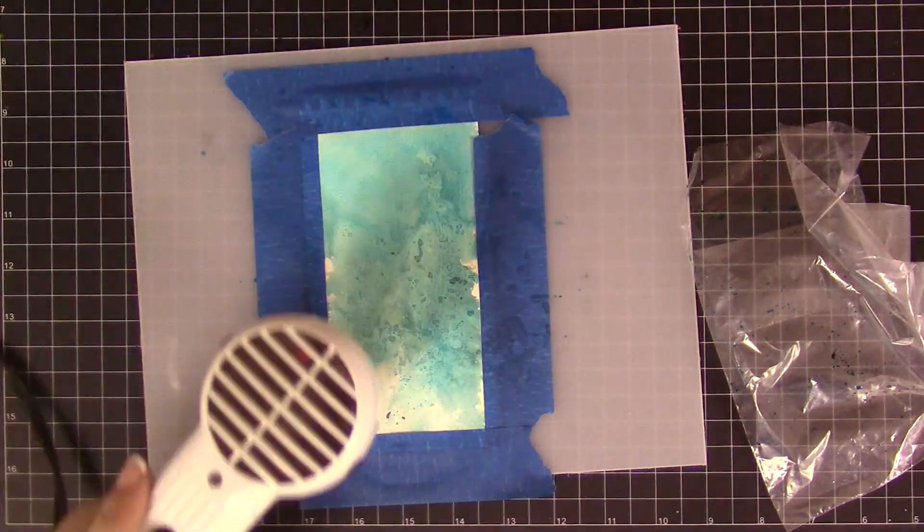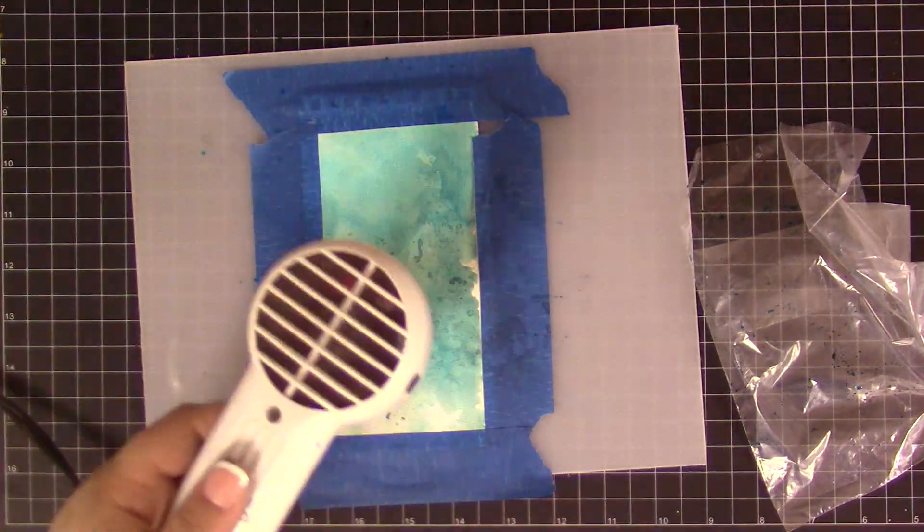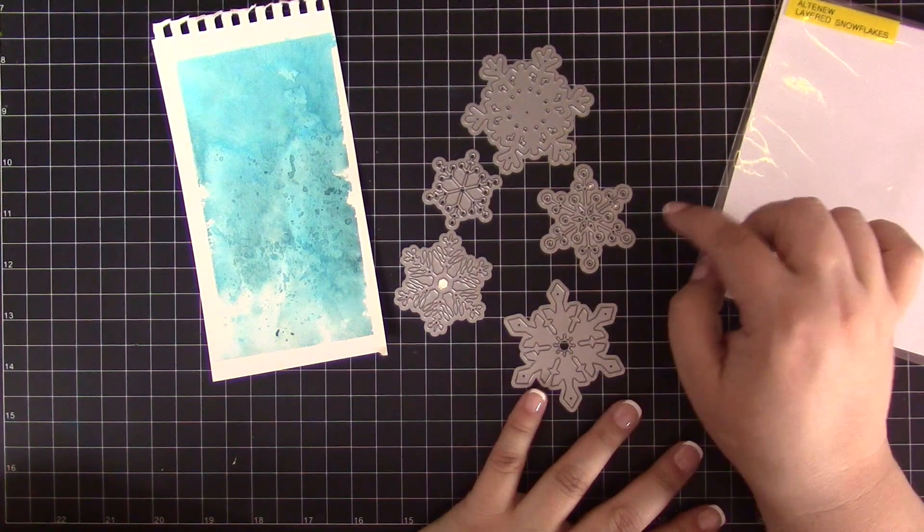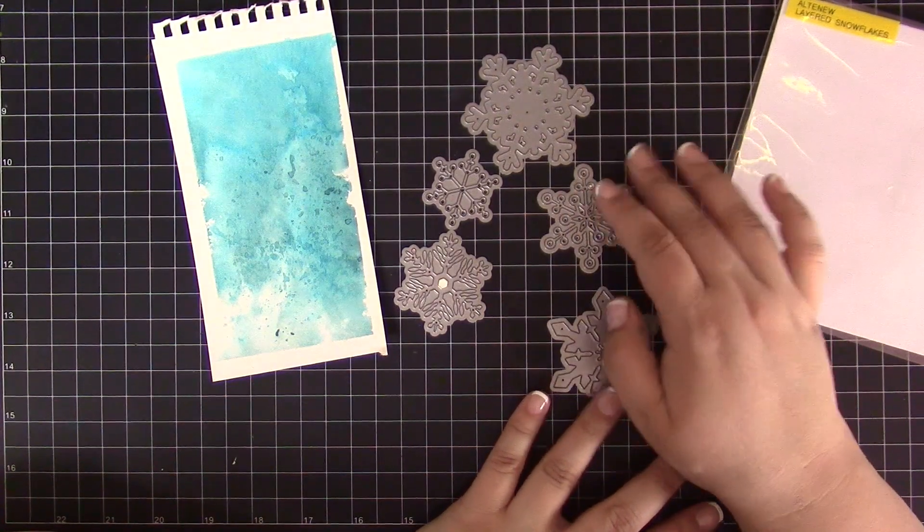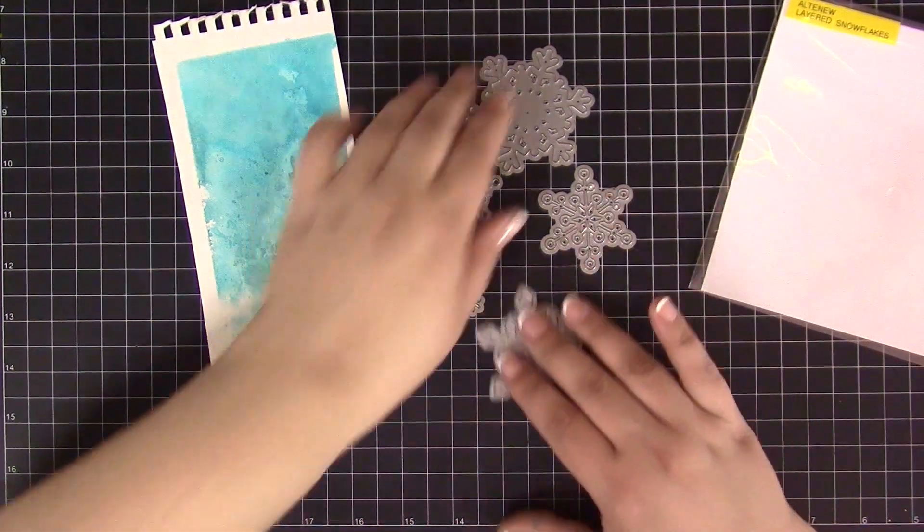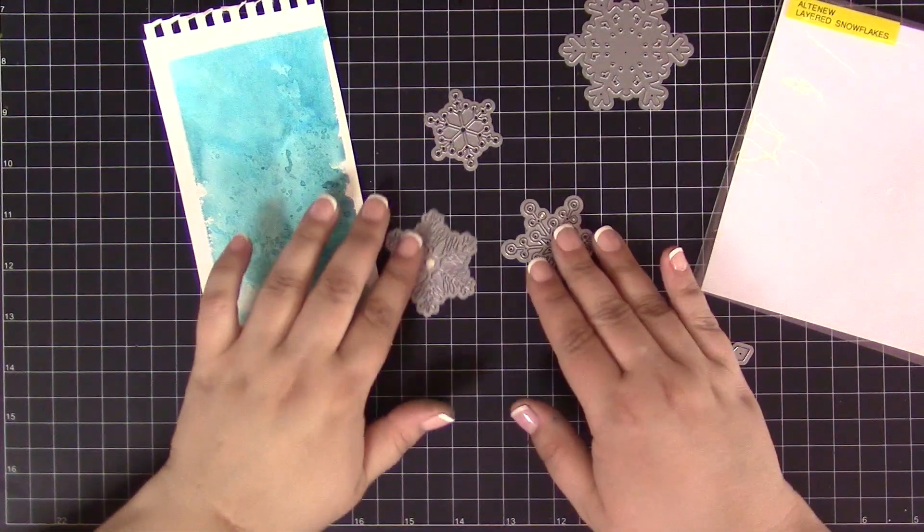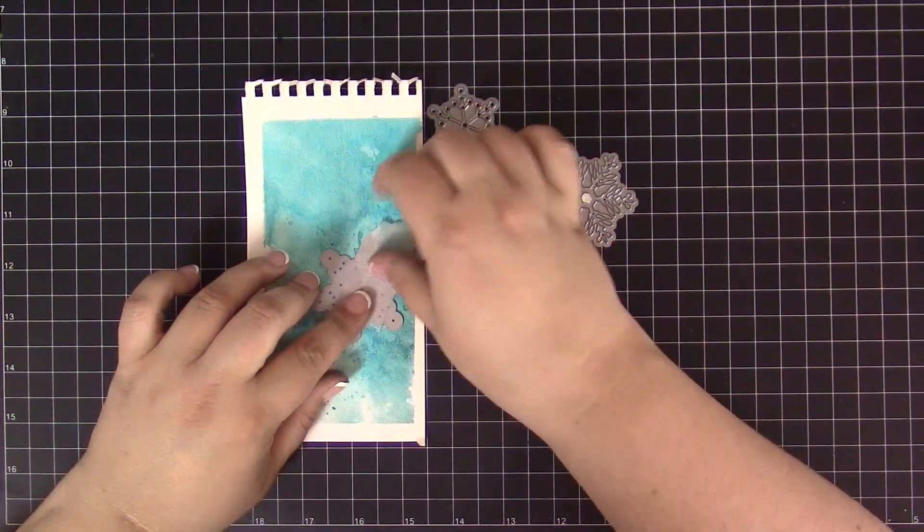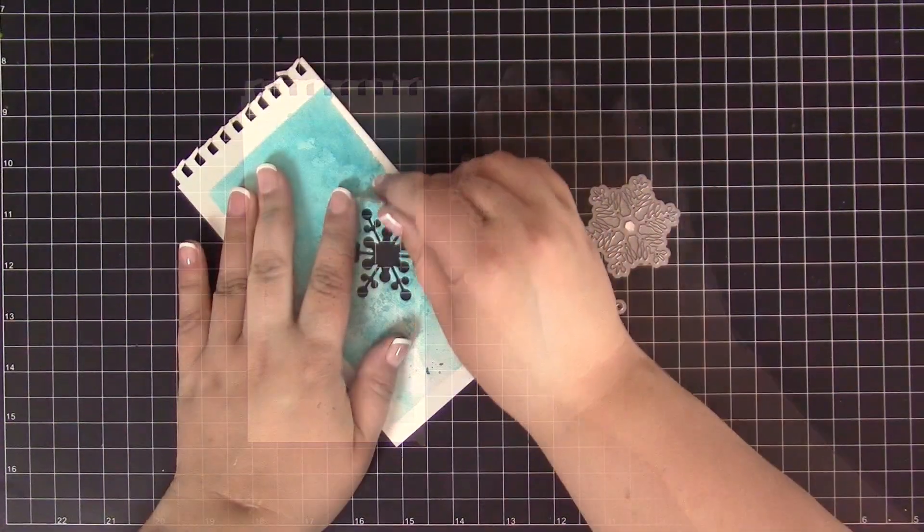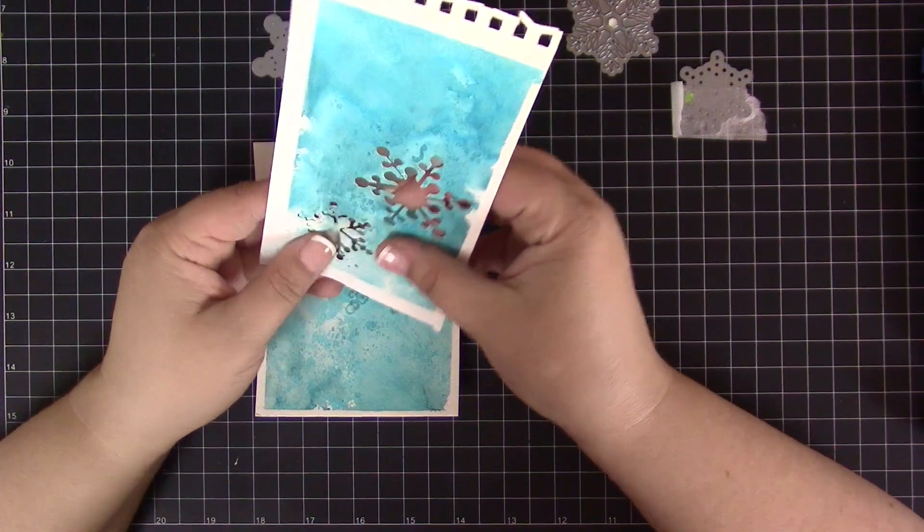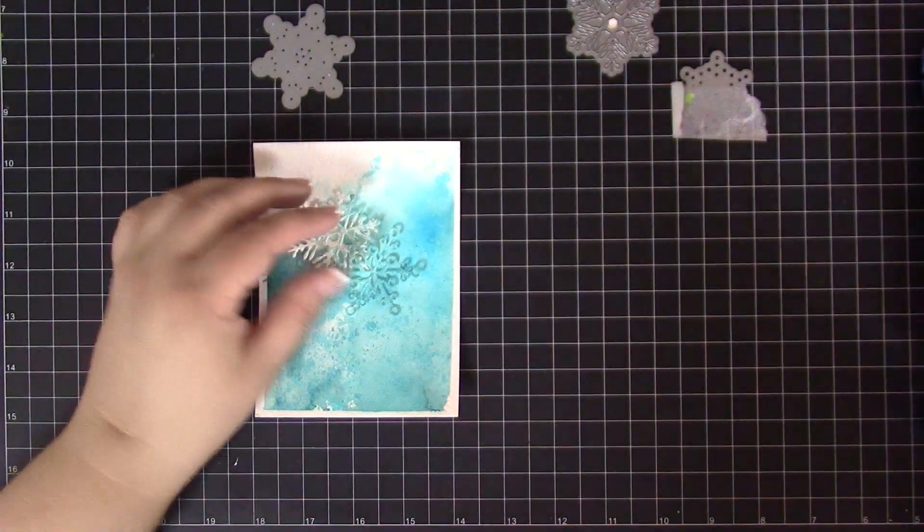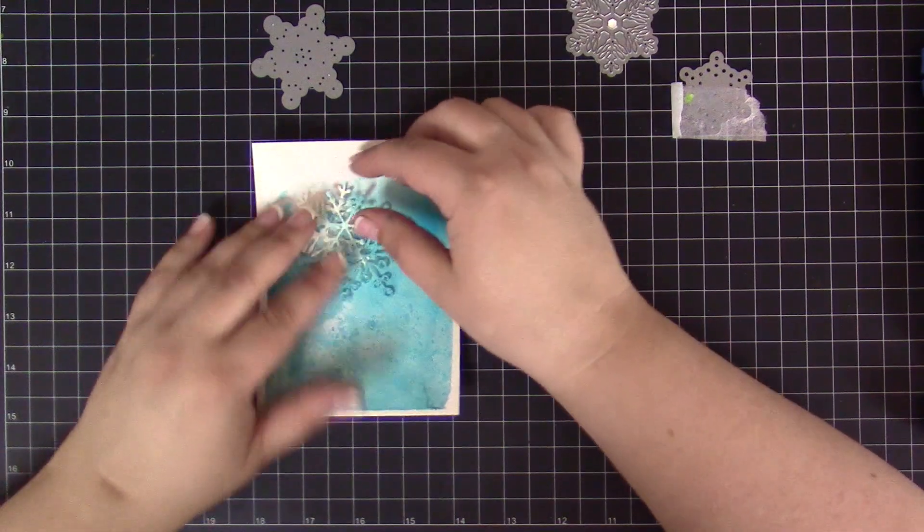I need this piece to be bone dry before moving to the next step, which is die-cutting snowflakes out of it. For this I will be using dies from the Layered Snowflakes Die Set. I die-cut two snowflakes out of this paper, and also I die-cut one additional snowflake out of just clean watercolor paper.